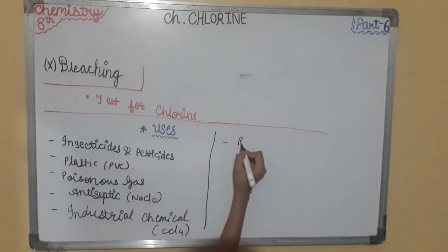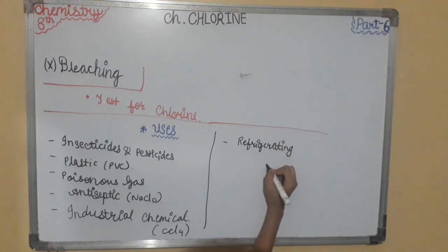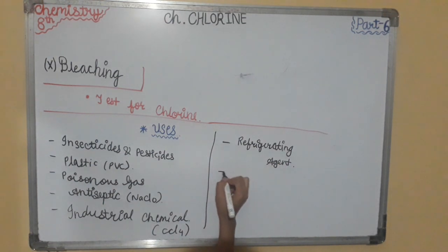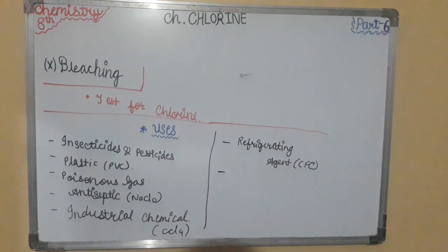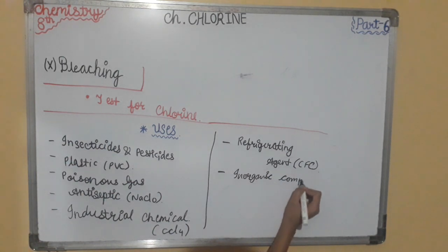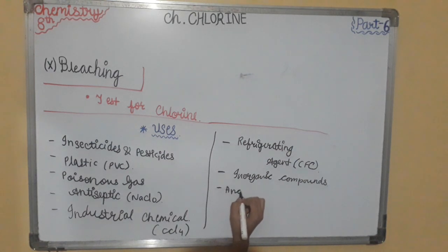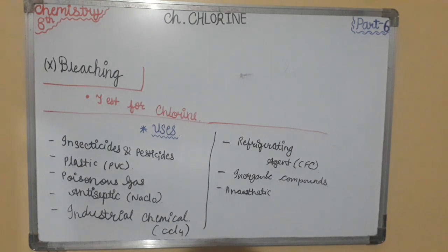Next, chlorine is used as a refrigerating agent — that is chlorofluorocarbon, CFC. Next, it is used in inorganic compounds — that is CaOCl2. And it is used as an anesthetic — CHCl3.